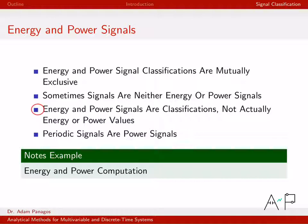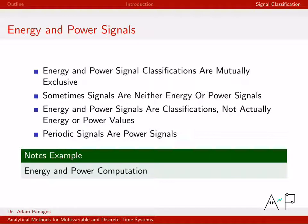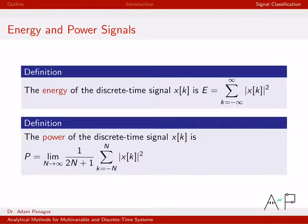The best way to think about energy and power values is really as a measure of the size of the signal. If you compute E and it's a large value, that tells you your discrete time signal is a big signal. Same for power: a large P means a large signal. Don't get too bent out of shape about the words 'power' or 'energy.' Also, a handy fact: periodic signals are always power signals. If you compute P for a periodic signal based on the definition, it will always be a power signal.